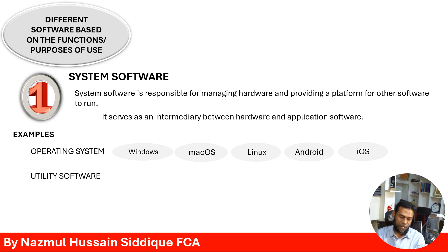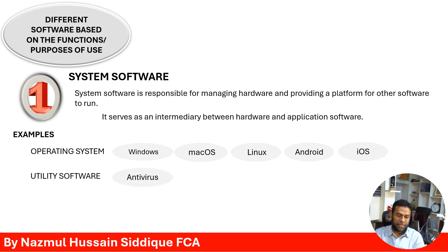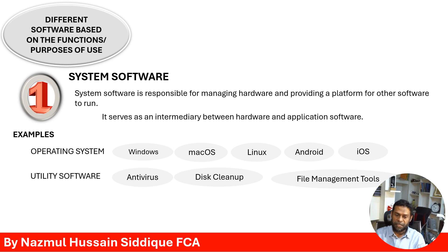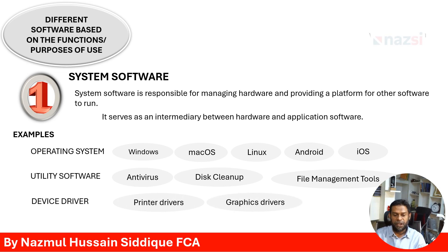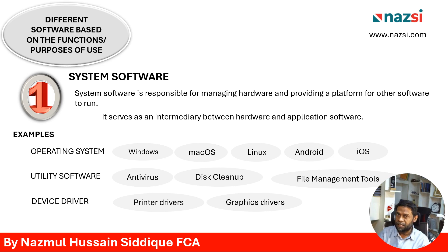Utility software is another category of system software. Examples of utility software include antivirus, disk cleanup, and file management tools. Next is device driver software — examples include printer drivers and graphics drivers. There are many more examples, but these are the ones discussed here.